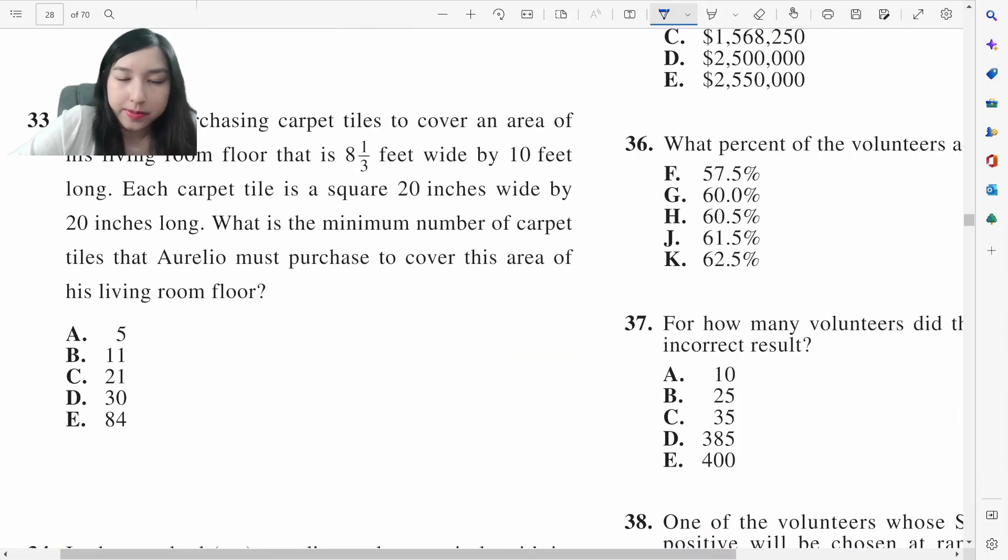He's purchasing carpet tiles. That is 8 and 1 third. Each carpet is 20 inches by 20 inches. Minimum number of carpet tiles? Oh, feet! So 1 feet is 12 inches, so 10 feet is 120. 8 and 1 third, 8 feet is 96, and 1 third is 12 divided by 3 is 4. This is 100 inches. 20 inches and 100, that's 5. 20 inches and 120, 5 times 6 is 30.